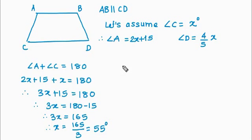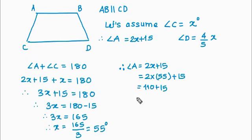And angle A, therefore, angle A is equal to 2x plus 15. So let's put this 55 there. So 2 times 55 plus 15. So that is equal to 125 degrees.